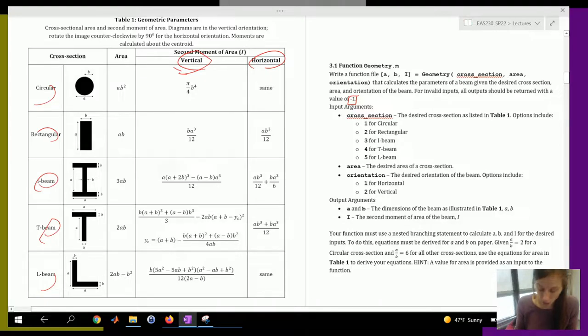So your cross section is going to be number one, two, three, four, five. It's your first input, it's a number.